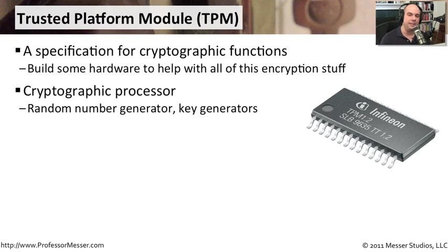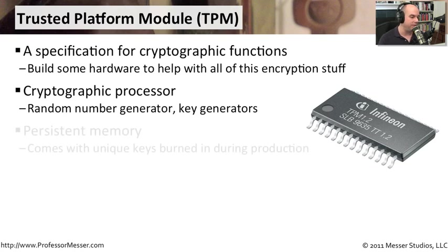One of the things on a TPM is a cryptographic processor. This is a processor built as a random number generator and has key generators built in. A lot of the heavy CPU usage involved in cryptography uses these standard processes, so having a piece of hardware that can do that rather than the main CPU of your computer is going to be helpful.